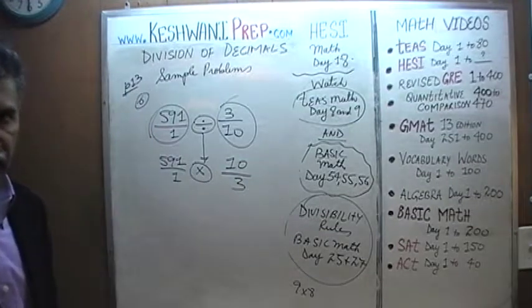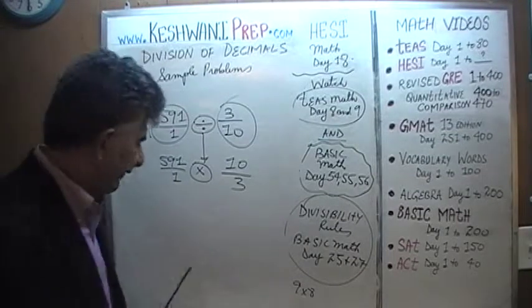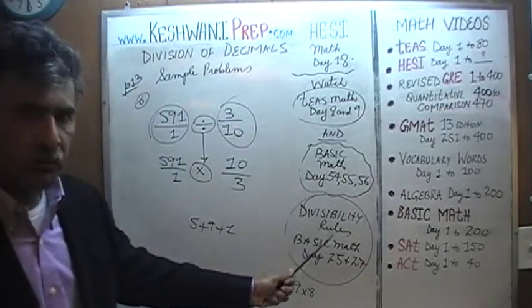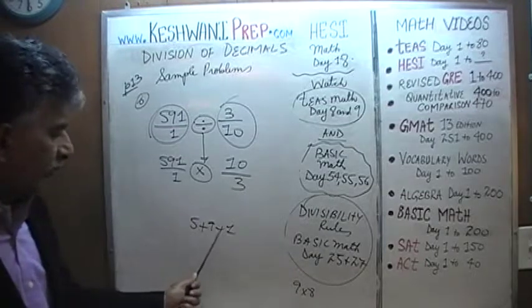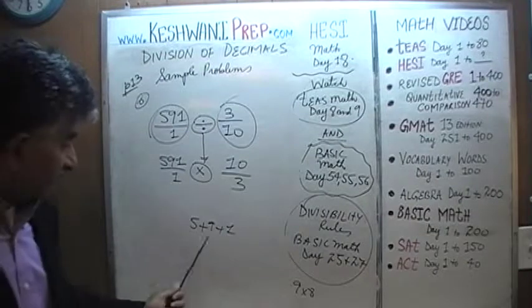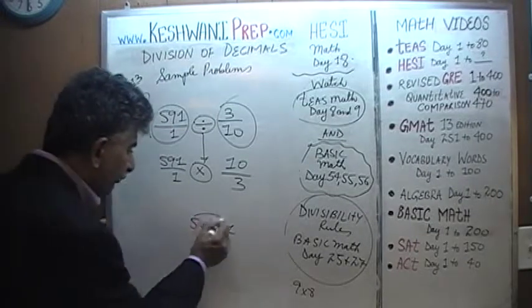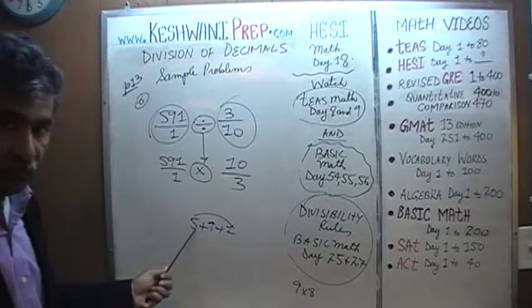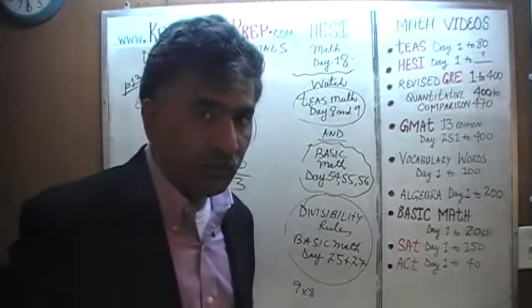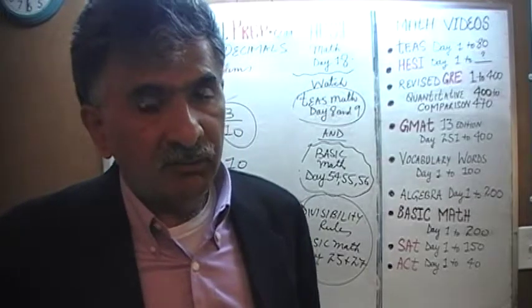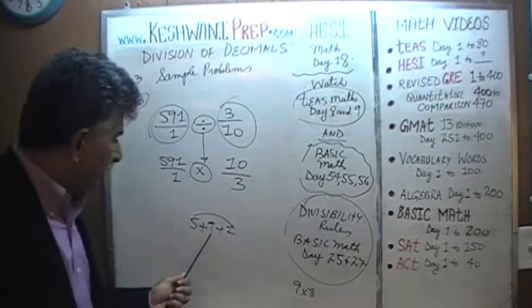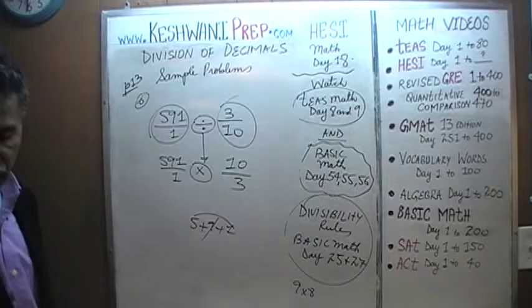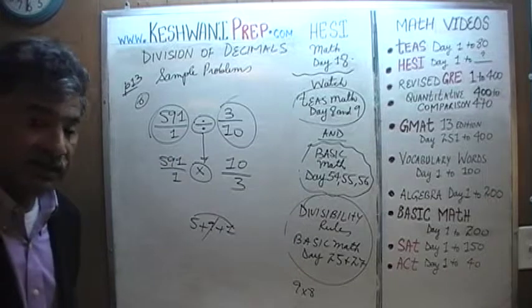Now we simply have to divide top and bottom by three, if we can. Is 591 divisible by three? In our divisibility rule, we learn that as long as the sum of the digits is divisible by three, the number itself is divisible by three. 5 plus 9 plus 1 is 15, and 6 — wait, 9 is divisible by three, so we simply look at 5 plus 1, which is 6. And 6 is divisible by three. So 591 is divisible by three.